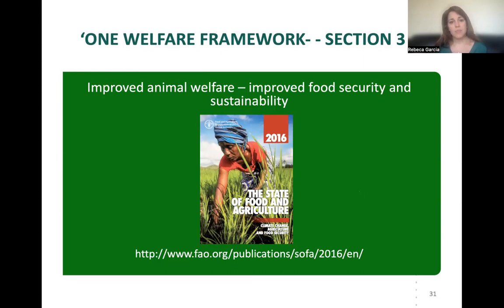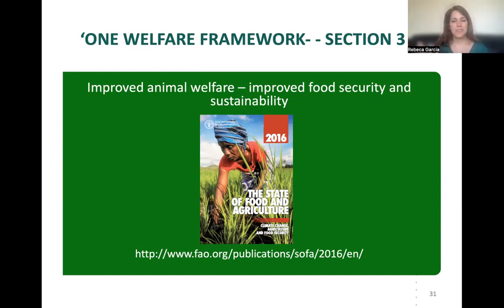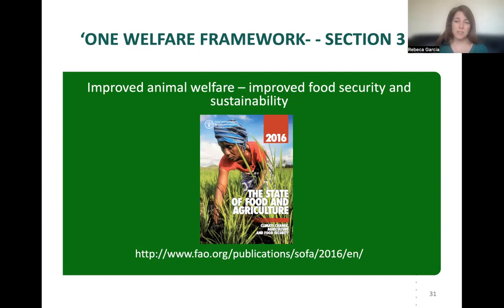There are reports produced annually — this one from FAO in 2016 focuses on the state of food and agriculture, food security, and sustainability. It's quite interesting how when we read these reports and talk about food security and sustainability, the words 'animal welfare' or 'human well-being' often don't appear, but they are intrinsic within the text. We all need to learn to identify that when reading texts about food security, animals are behind how that food is produced.